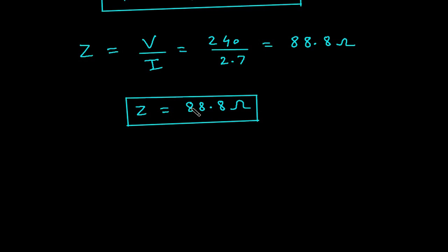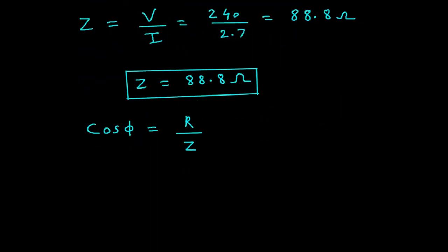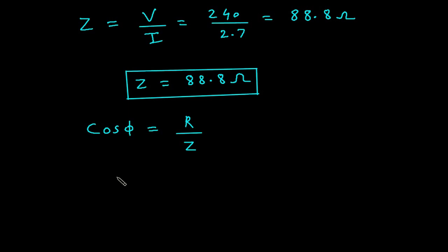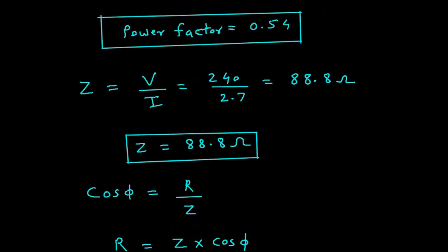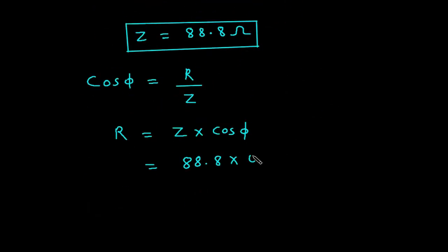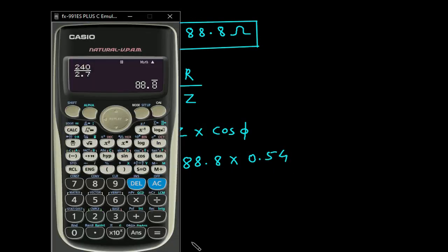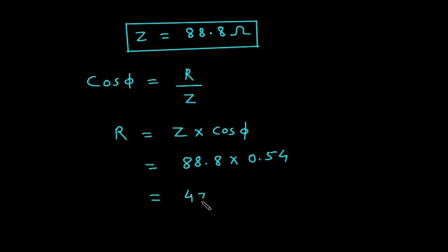Then, from this impedance we can find the value of R, because cosφ = R / Z. We have cosφ = 0.54 and Z = 88.8. So R = Z × cosφ = 88.8 × 0.54 = 47.95 Ω.